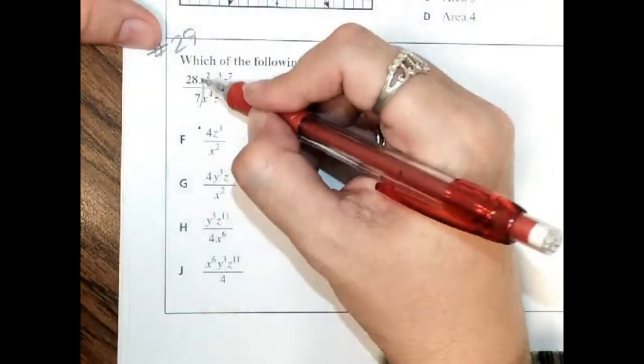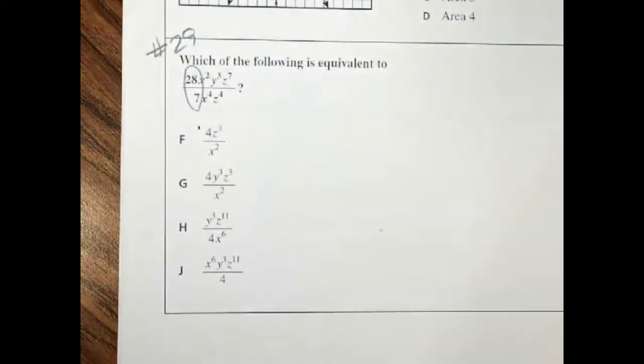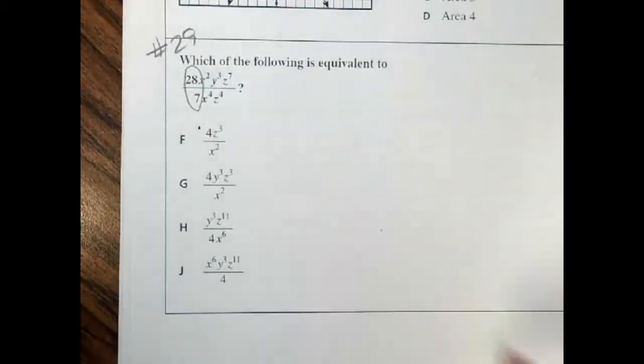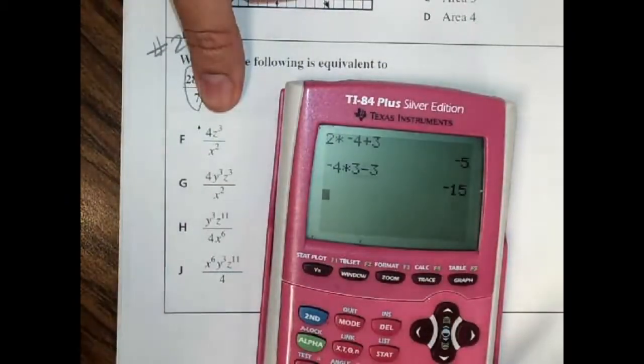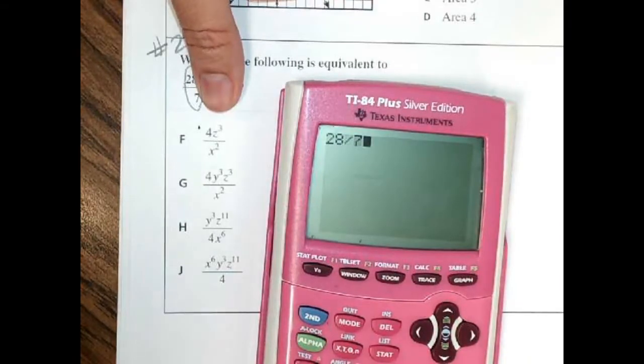The big numbers work just like big numbers always do. 28 over 7, that's just like a fraction we've always had. You can do it on your calculator. 28 divided by 7 is 4.